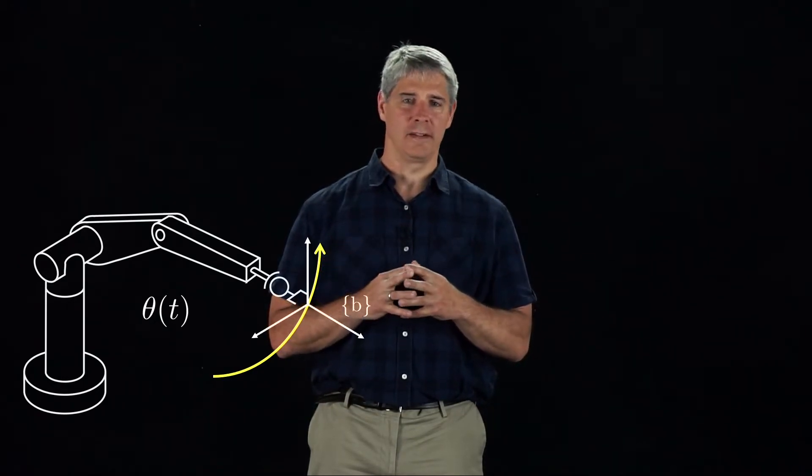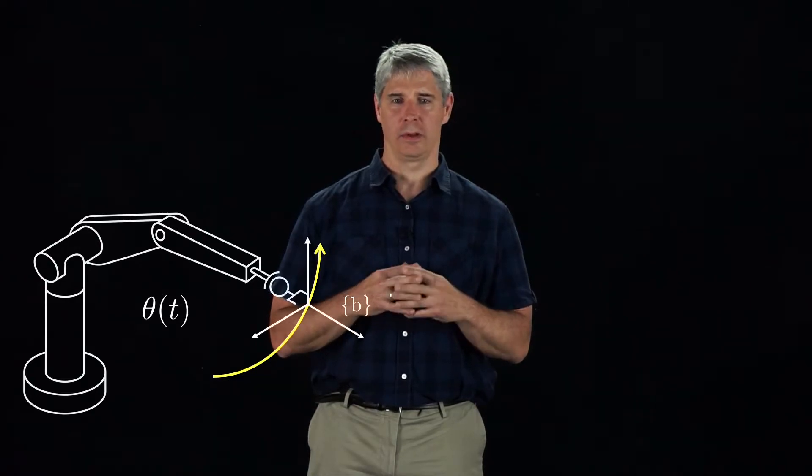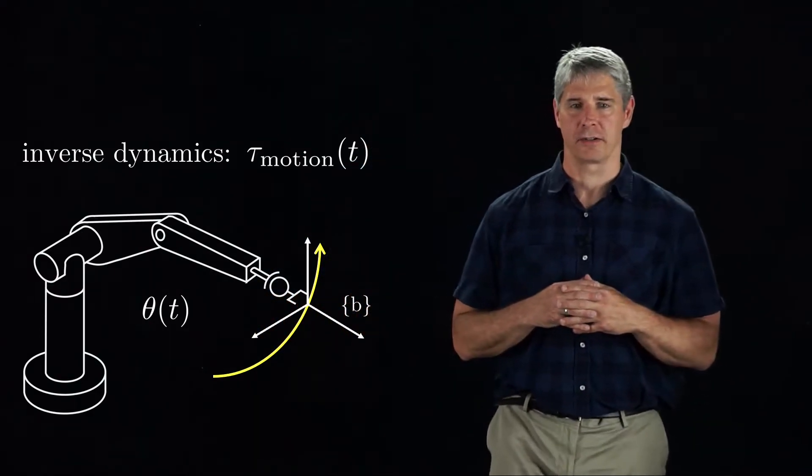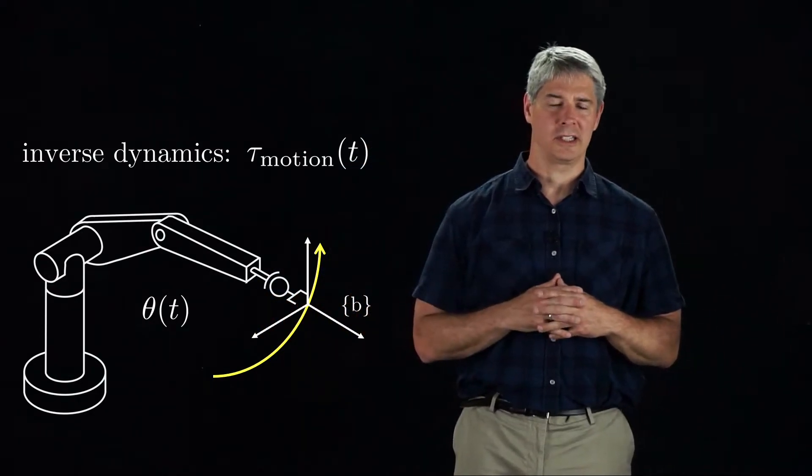In Chapter 8, when we study the inverse dynamics of a robot, we will learn how the trajectory theta of t can be turned into the torques required to move the robot along the trajectory. We call these torques tau motion of t.